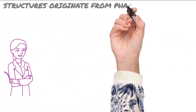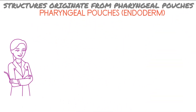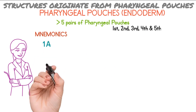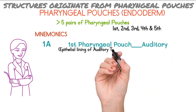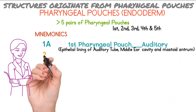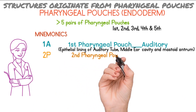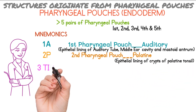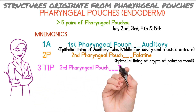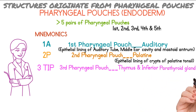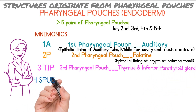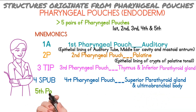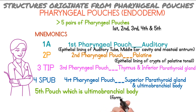Lastly, pharyngeal pouches, which are formed by endoderm, separate the arches internally and have five pairs. The first pouch mnemonic is '1A' — first pharyngeal pouch is related to the auditory tube; it forms the epithelial lining of the auditory tube, middle ear cavity, and mastoid antrum. The second pouch mnemonic is '2P' — related to palatine; it forms the epithelial lining of the crypts of the palatine tonsil. The third pouch mnemonic is '3TIP' — third pharyngeal pouch forms the thymus and inferior parathyroid gland. The fourth pouch mnemonic is '4SP-UV' — fourth pharyngeal pouch forms the superior parathyroid gland and ultimobranchial body. The fifth pharyngeal pouch is the ultimobranchial body and forms the parafollicular cells of the thyroid gland.